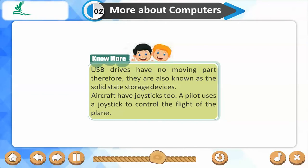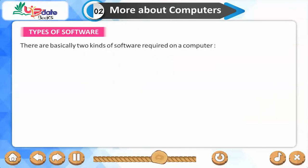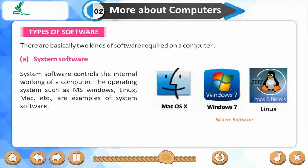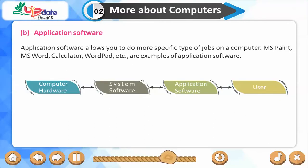Aircrafts have joysticks too — a pilot uses a joystick to control the flight of a plane. There are basically two kinds of software required on a computer: system software and application software. System software controls the internal working of a computer; examples include operating systems such as MS Windows, Linux, and Mac. Application software allows you to do more specific jobs on a computer; examples include MS Paint, MS Word, Calculator, and WordPad.